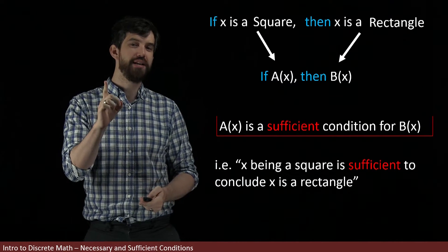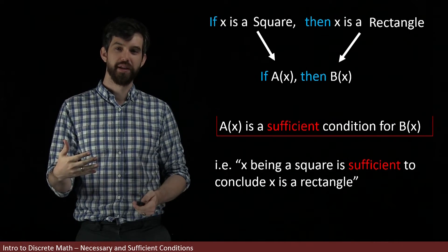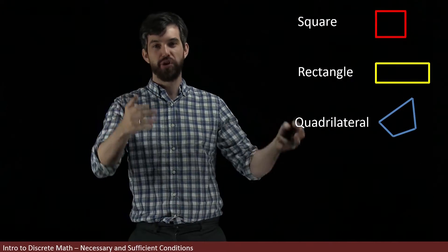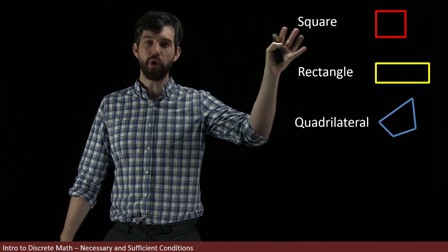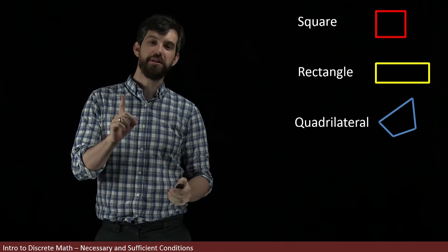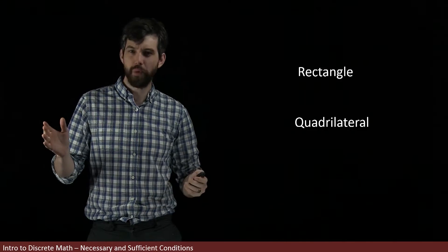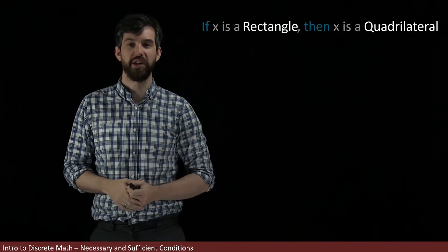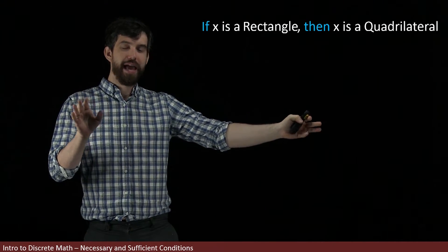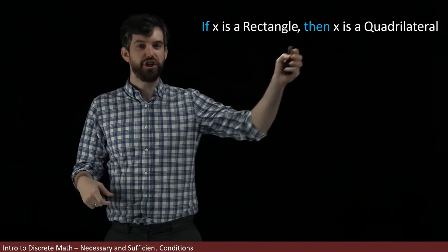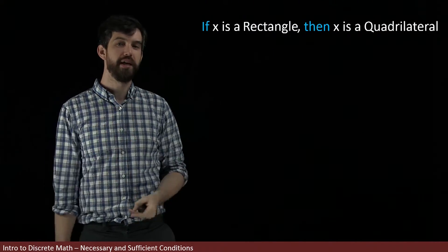Next, we turn to the idea of a necessary property, which deals with the other direction. Going back to our picture with the square, rectangle, and quadrilateral — and again trying to conclude the rectangle — let's focus just on the rectangle and the quadrilateral. We can say: if it's a rectangle, then it's a quadrilateral. This does not work the other way around, since there are four-sided shapes that are quadrilaterals but not rectangles, so this only works in one direction.